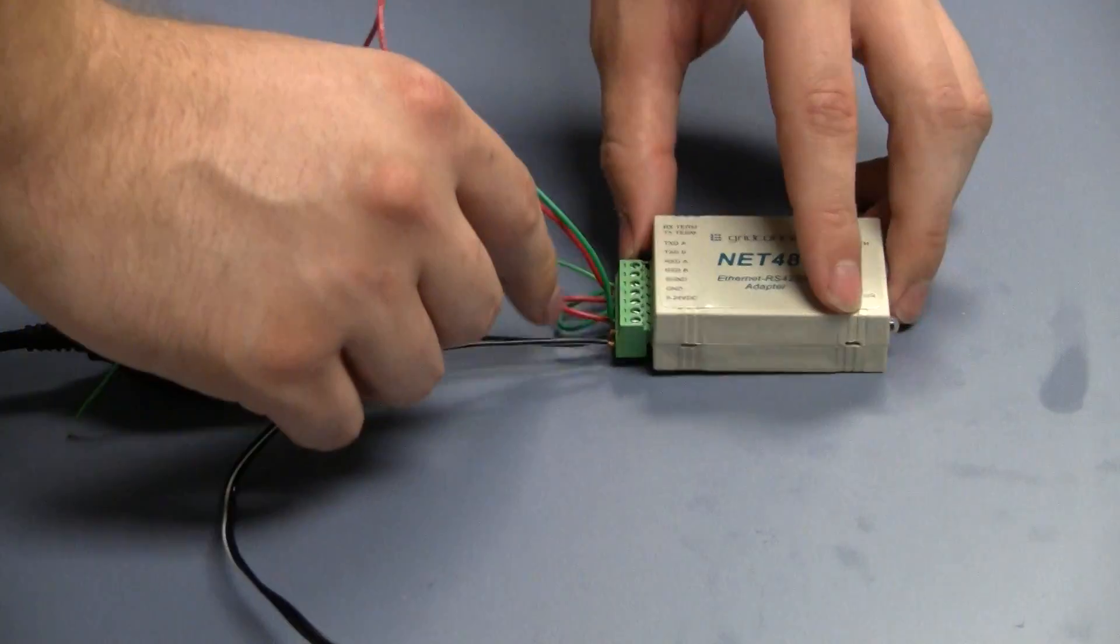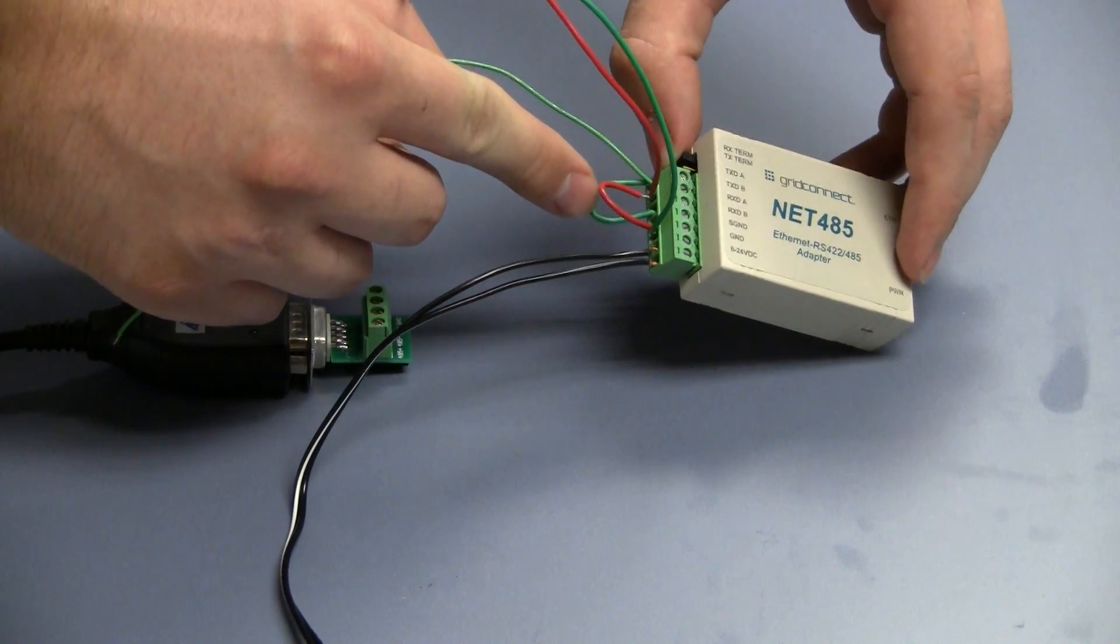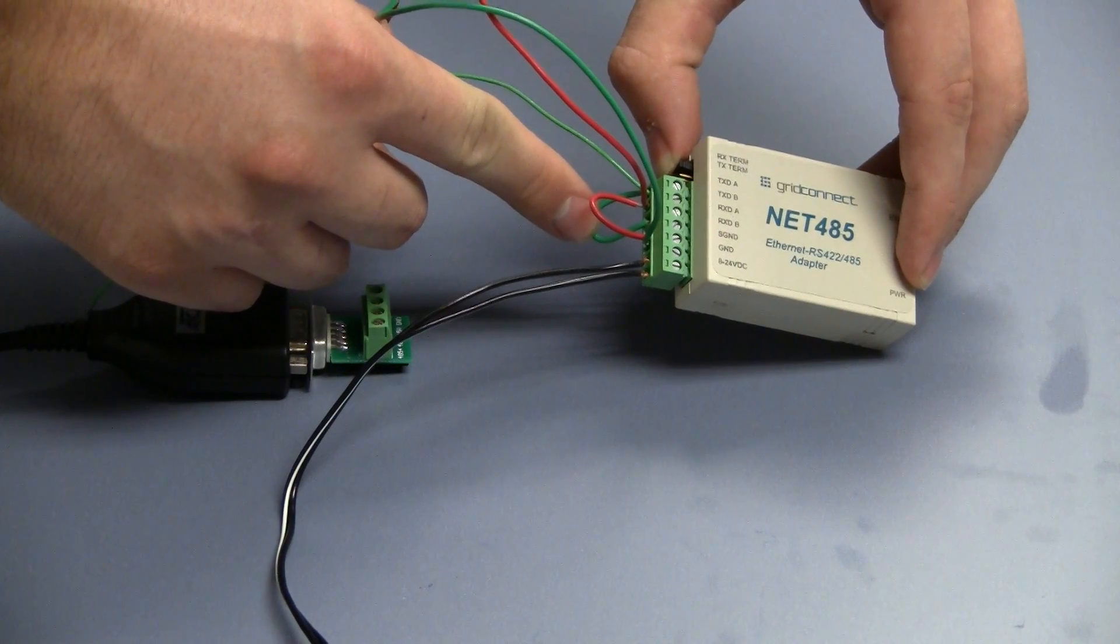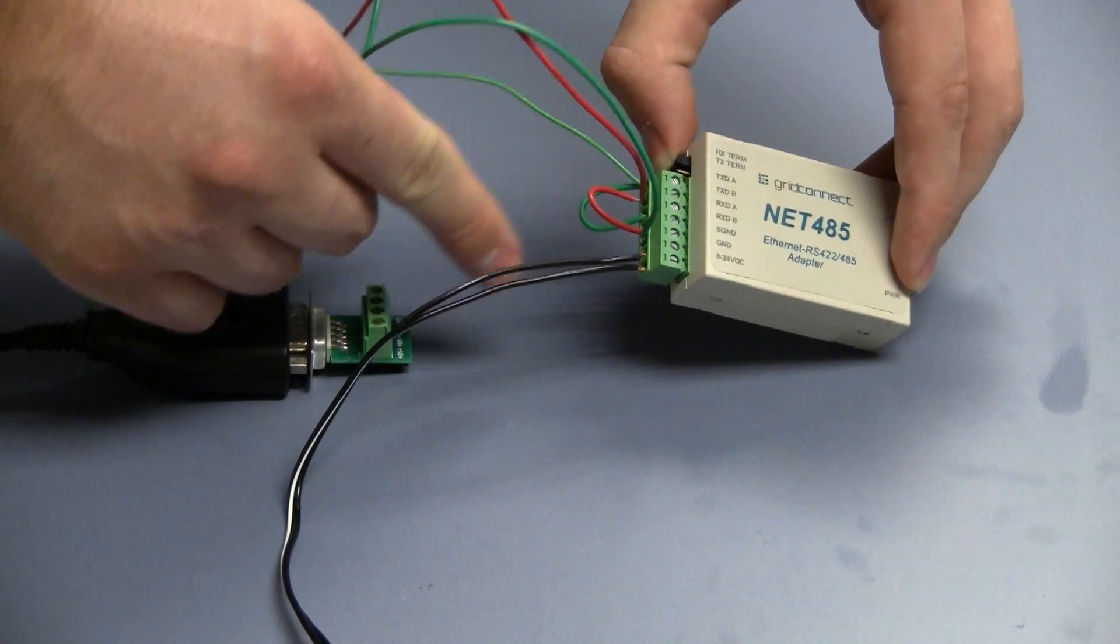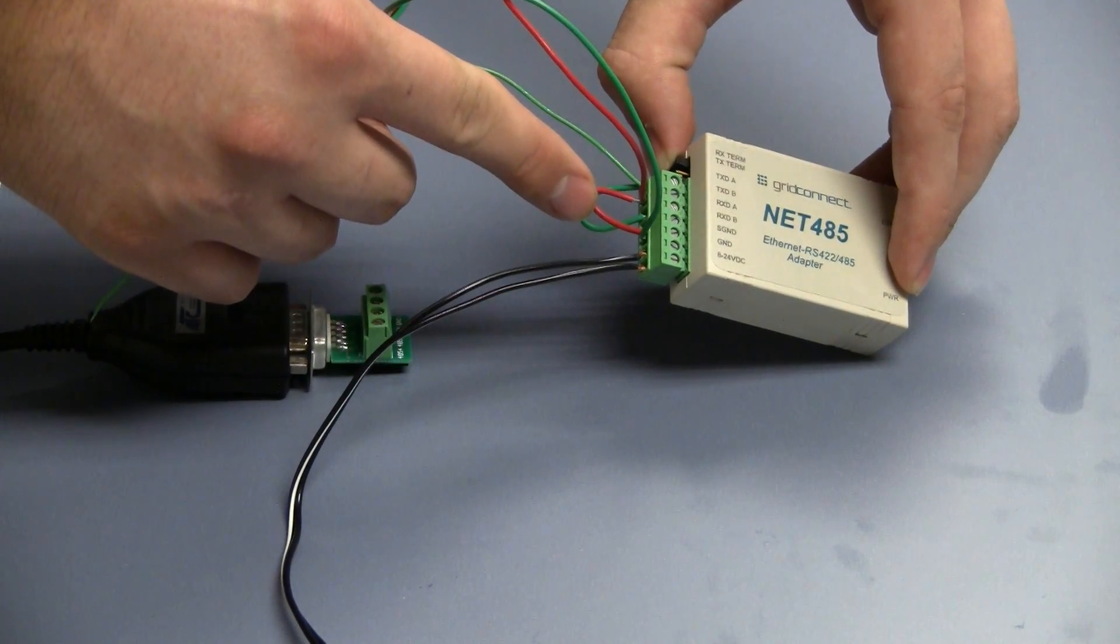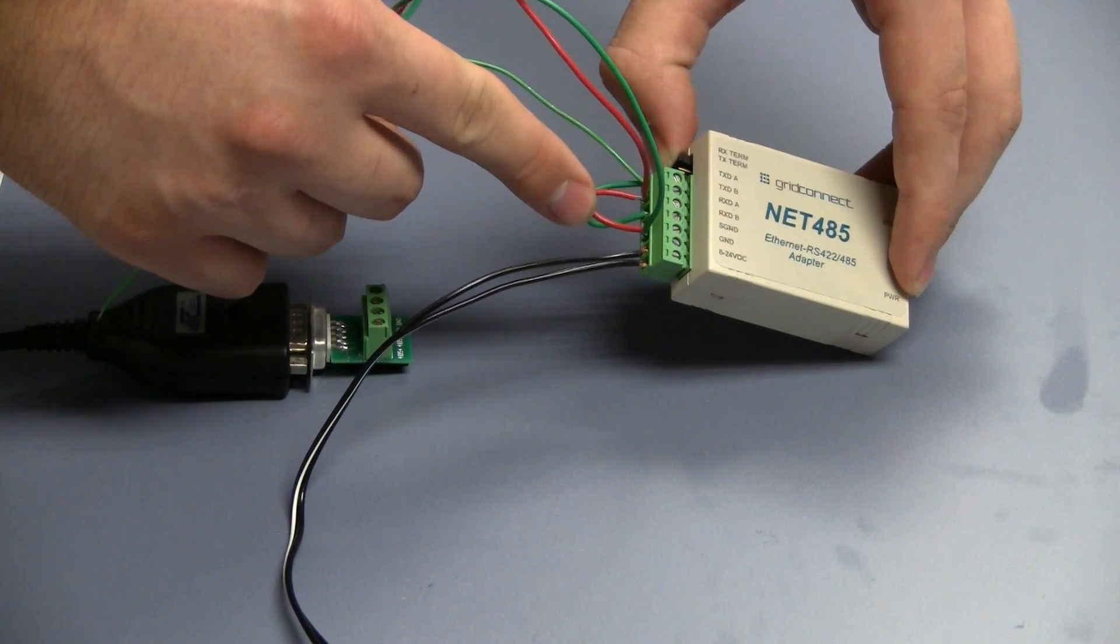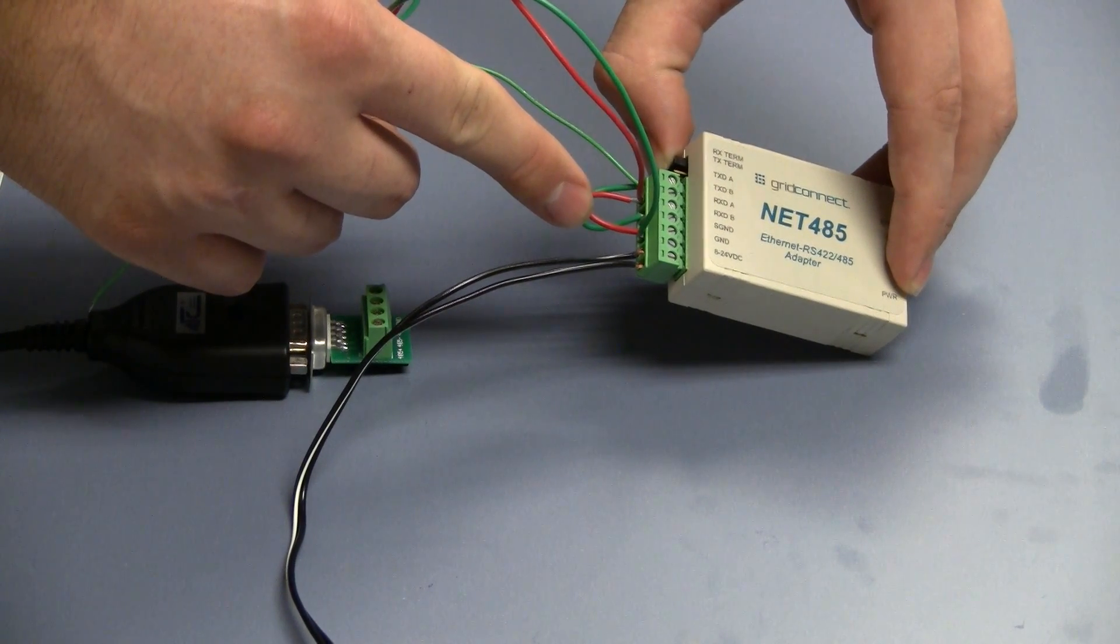Next, you'll want to jumper TXDA to RXDA, shown by this green wire, and jumper TXDB to RXDB, shown by this red wire.